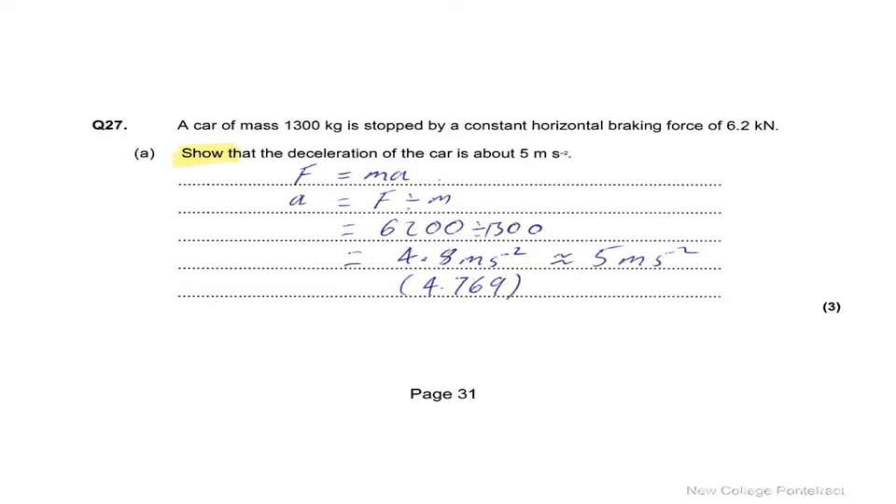A car of mass 1,300 kilograms is stopped by a constant horizontal braking force of 6.2 kilonewtons. We're asked to show the deceleration is about 5 meters per second squared.